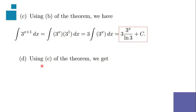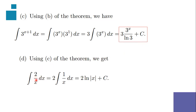For the fourth example, we will be using the third theorem. The given is the integration of 2 over x dx. Since 2 is a constant, we place it outside the integral symbol. That's 2 times the integration of 1 over x dx, which equals 2 ln(x) plus C. And that's our answer for the fourth example — that's how simple it is.